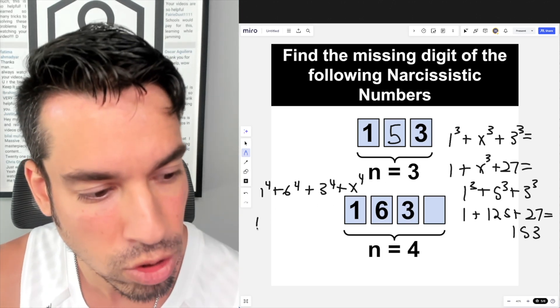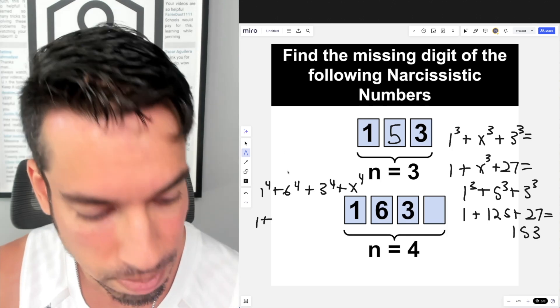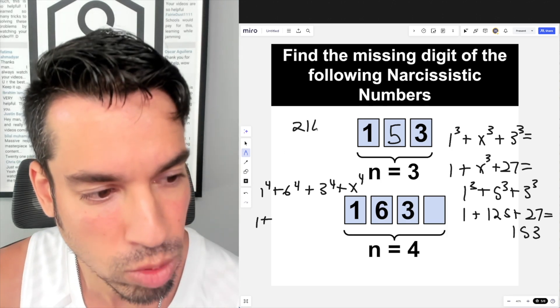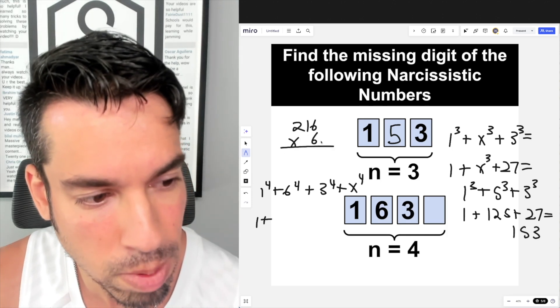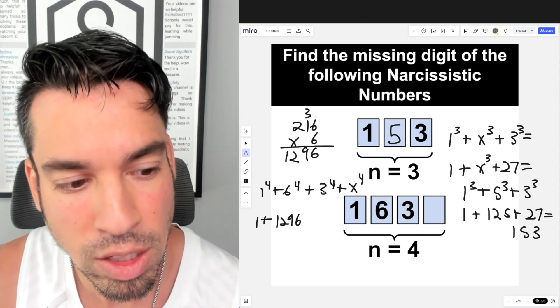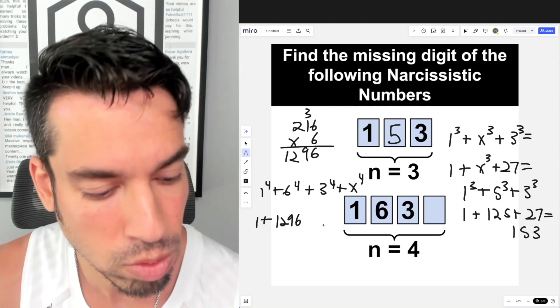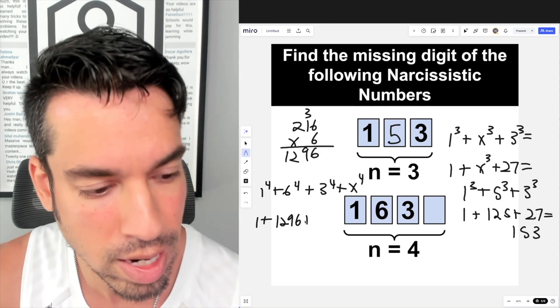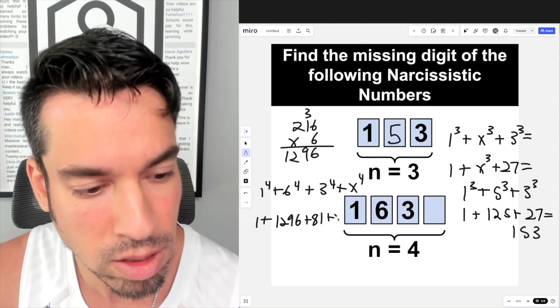1⁴ is 1. Now what about 6⁴? 6³ is 216, which I do have memorized. Let's get 6⁴ by multiplying it out. We've got 36, carry the 3, 6 times 9 is 54 plus 3 is 57, carry the 5, 6 times 2 is 12 plus 5 is 17, so we got 1296. Next we have 3⁴, which is 3 times 3 times 3 times 3, which is 81. And then some x to the fourth.